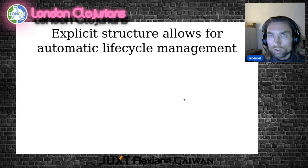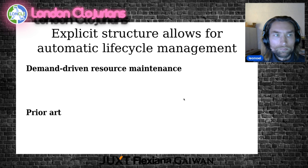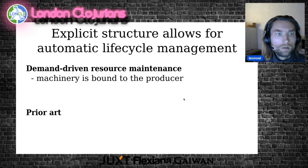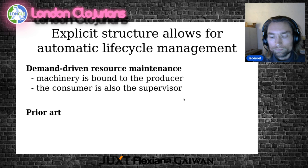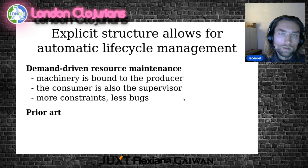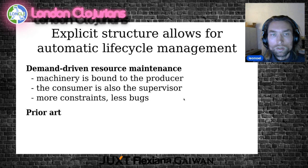What's the solution to that? Structure. Explicit structure allows for automatic life cycle management. What we want to achieve is to bind the time span where the resource is allocated to the time span when the data produced by this resource is actually needed. So it's demand-driven resource management. We are going to bind the machinery to the producer, and the consumer will be in charge of the supervision. This means we are going to add more constraints to our programming model, and what we gain is eliminating an entire class of bugs related to bad resource life cycle management.